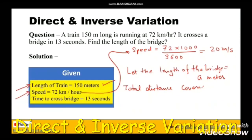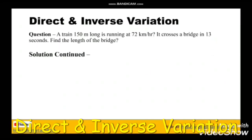Since the length of the bridge is not given, we have assumed it to be a meters. So the total distance covered will be the length of the train, 150 meters, plus the length of the bridge, a meters. Finally we can write 150 plus a meters is the total distance covered.